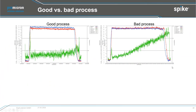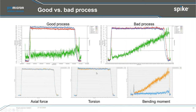Comparing a good process to a bad process: in the bad process, the bending moment clearly shows the tool is deflecting — it enters correctly but then curves. Looking at actual force and torque, you cannot see this effect at all. My message: don't forget to look at the bending moment data in drilling operations. It tells you about quality; the other signals tell you about process stability.